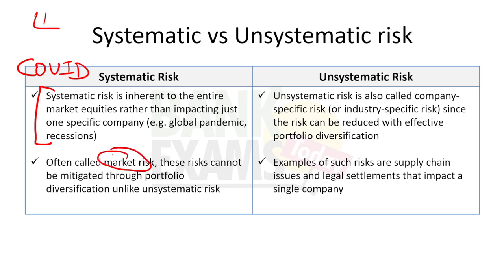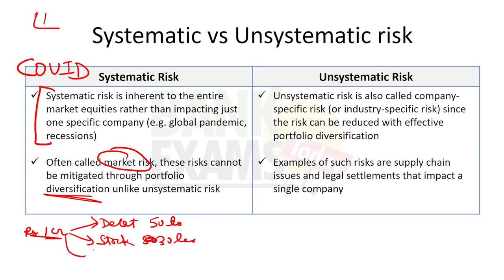You cannot mitigate or reduce systematic risk with the help of diversification. What is diversification? Let's assume you have 1 crore rupees and you want to invest. You invest 50 lakh in debt instruments, 30 lakhs in stocks of various companies, and 20 lakhs in gold. In case the stock market crashes by 50%, you lose only 15 lakh rupees. But if you had invested the entire 1 crore in stocks and the market crashed by 50%, you lose 50% of your portfolio. That is diversification — high diversification means lower risk.